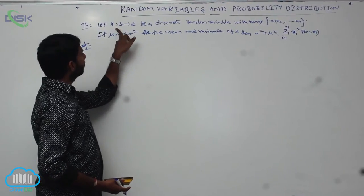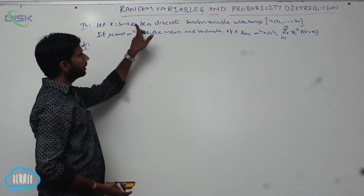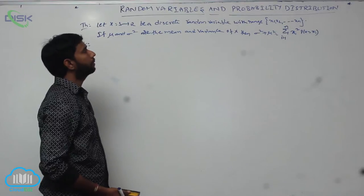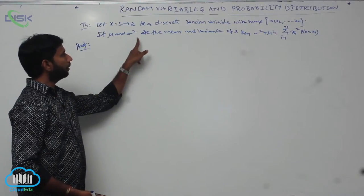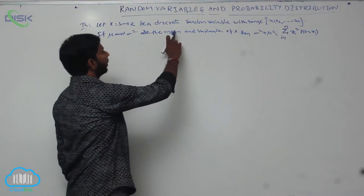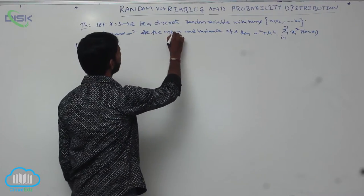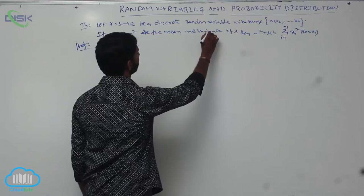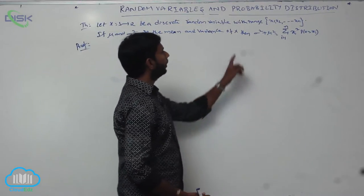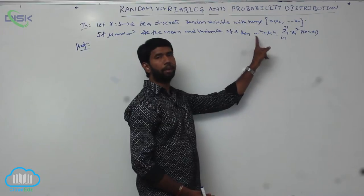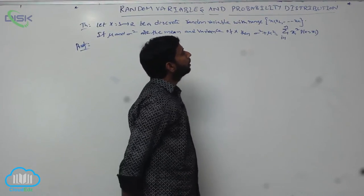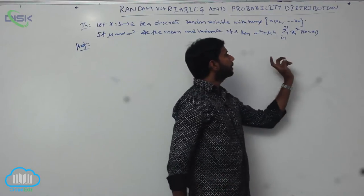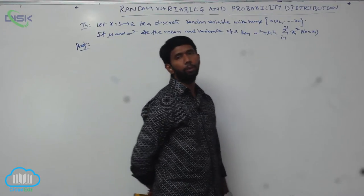Let capital X, mapping from S to R, be a discrete random variable with range x1, x2, ..., xn. If mu and sigma squared are the mean and variance of the random variable X, then sigma squared plus mu squared equals the sum from i equals 1 to n of xi squared times P(X = xi).